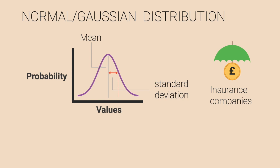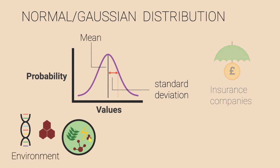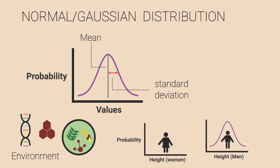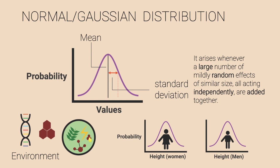Another example can be the height of adults. Our height depends on many factors such as genetics, biochemistry, nutrition and environment. Consequently, when viewed in aggregate, the heights of adults in men and women also follow a normal distribution. The normal distribution arises whenever a large number of mildly random effects of similar size all acting independently are added together. And many things are like that. But not everything.